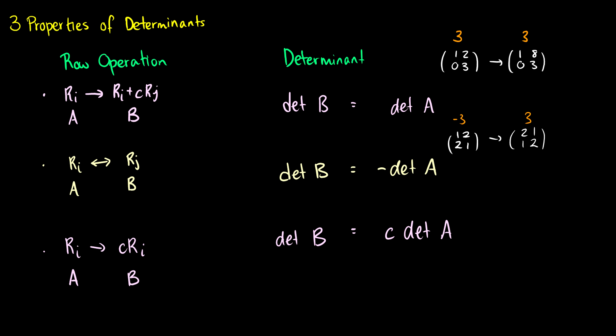What if we take a row and scale it? Let's say matrix A is [1, 3; 2, 2], and in matrix B we scale the second row by 3, giving us [1, 3; 6, 6].